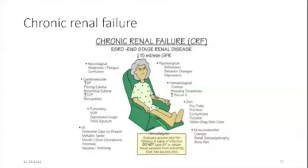Renal osteodystrophy is a late sign of chronic renal disease, usually due to alterations in calcium and phosphorus metabolism. It is characterized by bone demineralization, decreased trabeculation, decreased thickness of cortical bone, abnormal bone healing after extraction, and sometimes gentle mobility as a consequence of loss of bone.